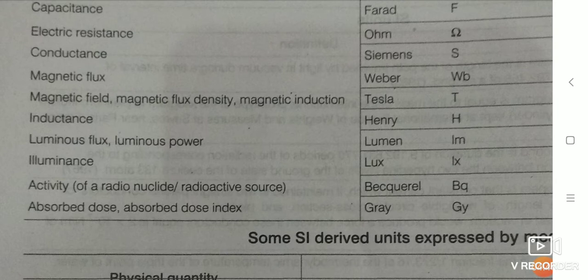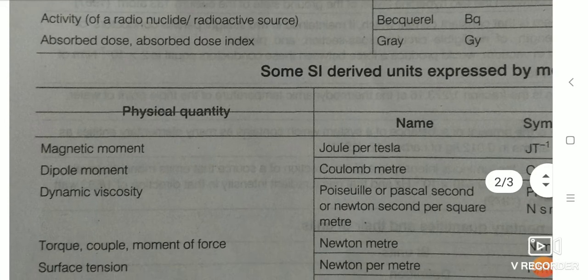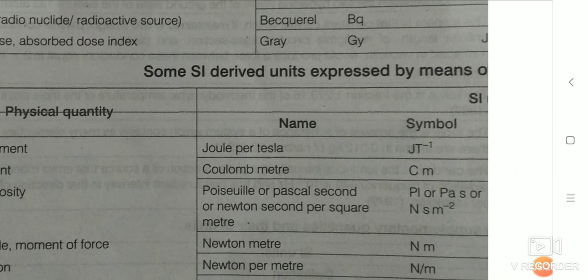Now we have some SI derived units expressed by means of SI units. The physical quantity magnetic moment — its SI unit is joule per tesla, denoted by J·T⁻¹. Next is dipole moment — its SI unit is coulomb meter, denoted by C·m.